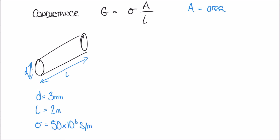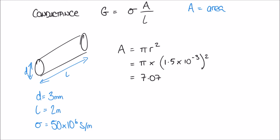The cross-sectional area of our wire is a circle, and the formula for the area of a circle is A equals pi r squared. We're quoted the diameter as 3 millimetres, so the radius is 1.5 millimetres. Plugging that in: A equals pi multiplied by (1.5 times 10 to the minus 3) squared, which gives us 7.07 times 10 to the minus 6 metres squared — a very small area.